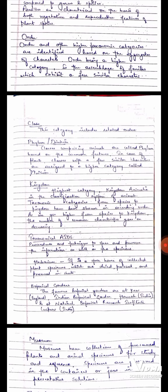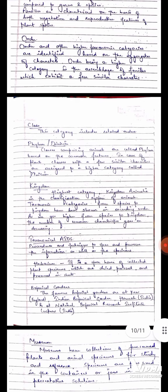When we talk about the higher category kingdom, it is the highest category. Kingdom animalia in the classification system of animals. Taxonomic categories from species to kingdom have been shown in ascending order. As we go higher from species to kingdom the number of common characters goes on decreasing.